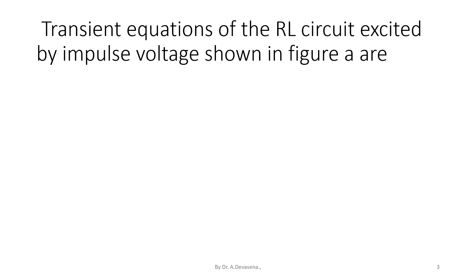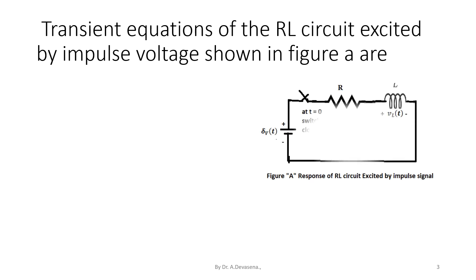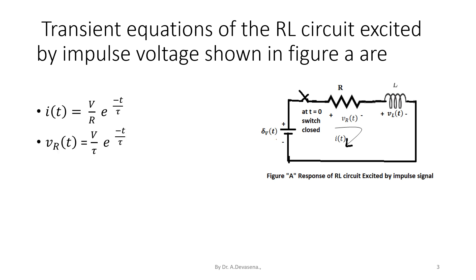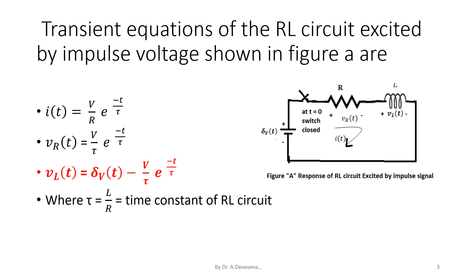Transient equations of the RL circuit excited by impulse voltage shown in figure A: voltage drop across the inductor V suffix L of t is equal to delta suffix V of t minus V by tau into e power minus t by tau, where tau is equal to L by R, that is the time constant of the RL circuit.